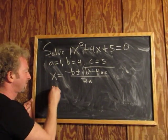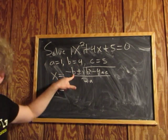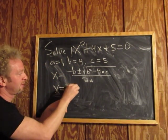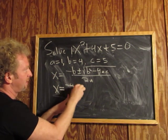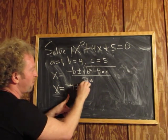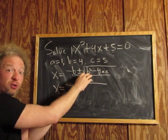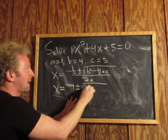So x is equal to, well, b is 4, so this will be negative 4, plus or minus, and then let's see, square root, b is 4, so 4 squared is 16, 16 minus...